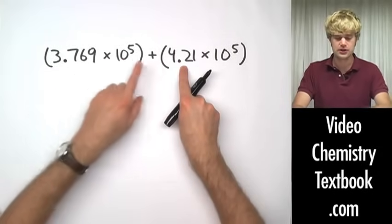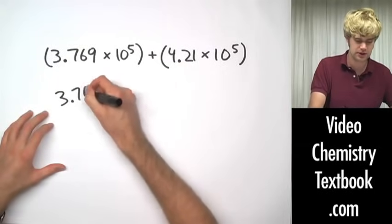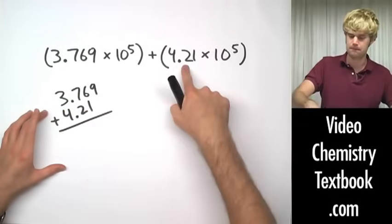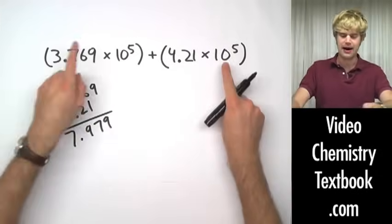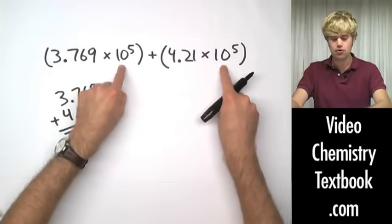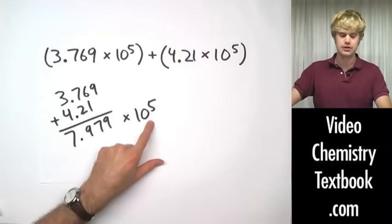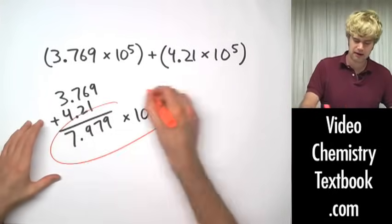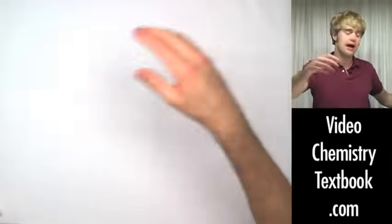Here's all I have to do. I take the coefficients and, since this is addition, I add them together. 3.769 plus 4.21. These two guys. And I do that math. And now, since the powers were the same, all I do is bring this power down, 10 to the 5th, and use it in my final answer. Simple as that. So my answer is 7.979 times 10 to the 5th. All I have to do is do the math and then I just bring down 10 raised to the exponent.